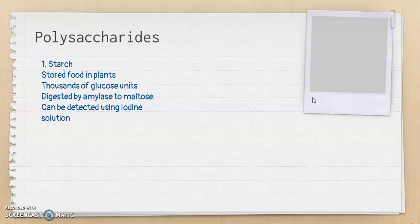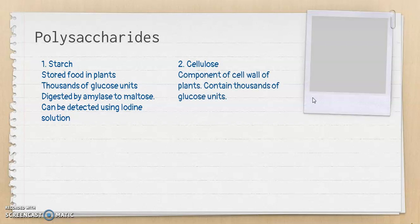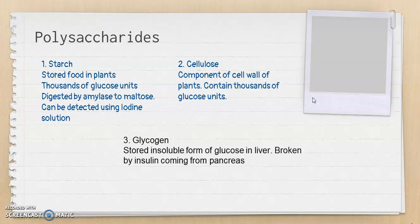Starch can be detected using iodine solution. If starch is present, the iodine changes from brown to blue-black. The second polysaccharide is cellulose, also found in plants — specifically, it makes up the cell walls of plant cells, found outside the cell membrane. Cellulose also contains thousands of glucose units, but there is a structural difference from starch that makes them individually distinct.